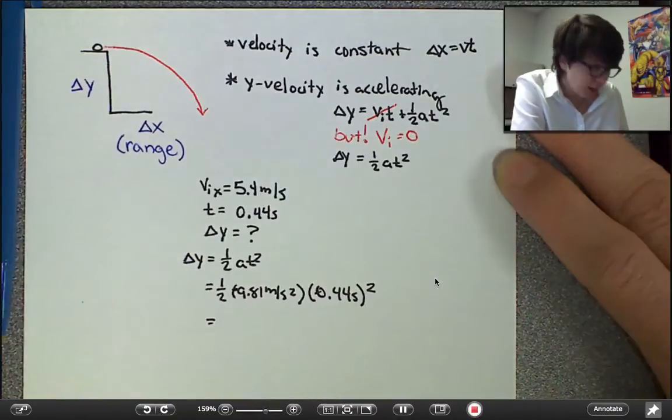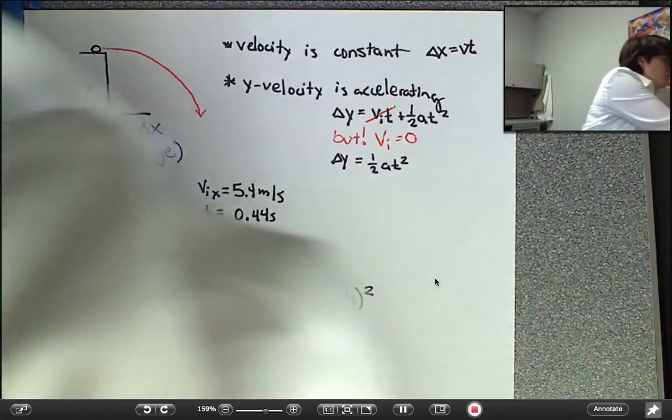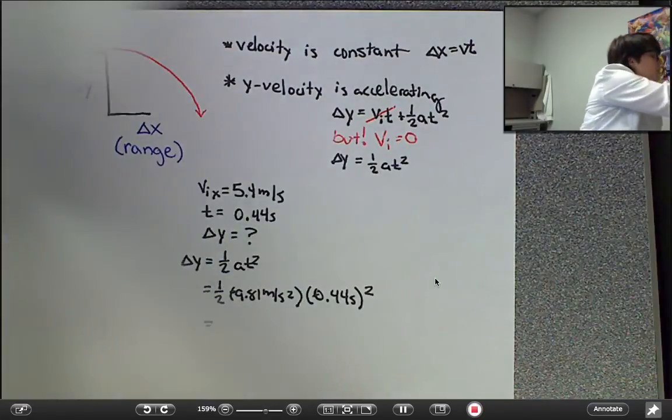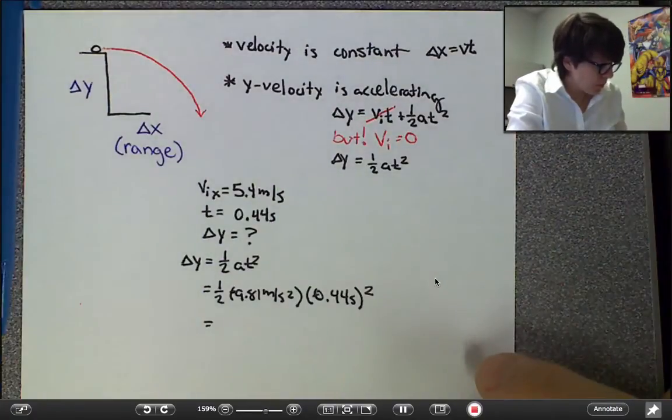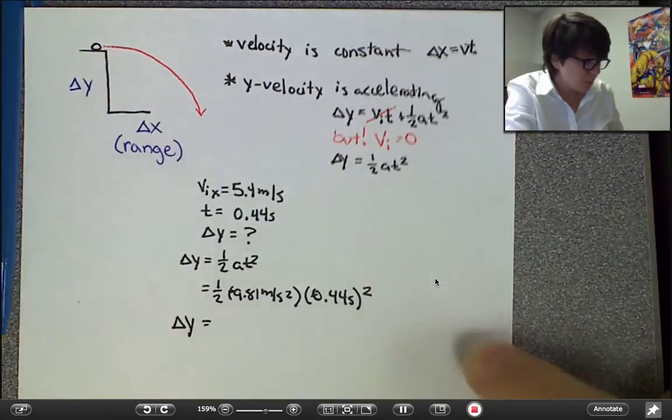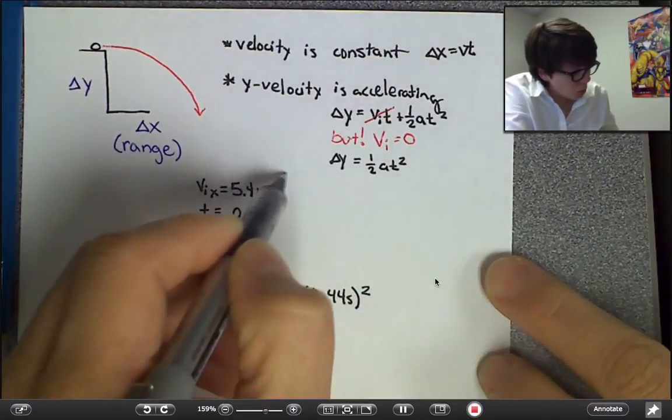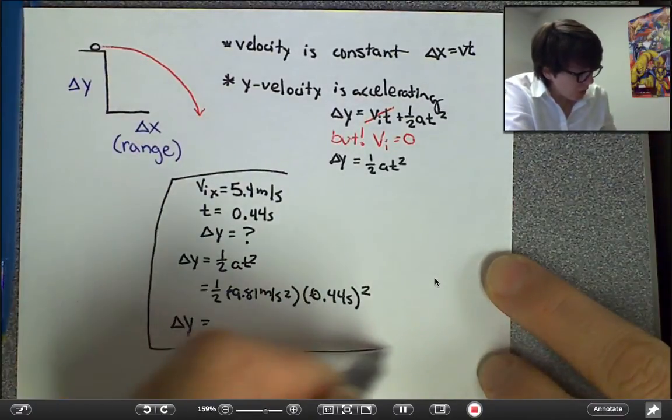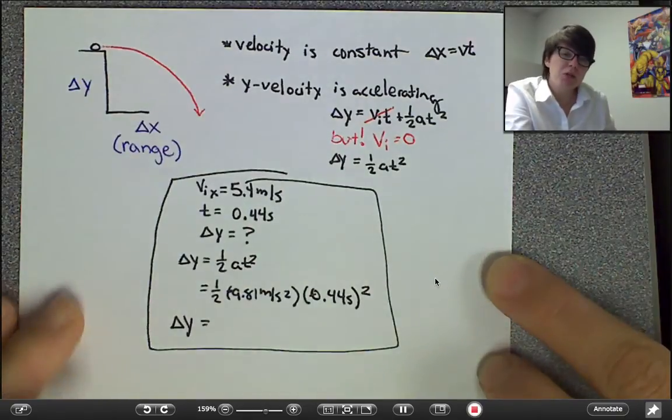So, recall that your acceleration vector is negative. So, the delta y number that you get will be a negative value. Let me grab my calculator. Take that back. I'll let you crunch the numbers. This will give you a delta y.